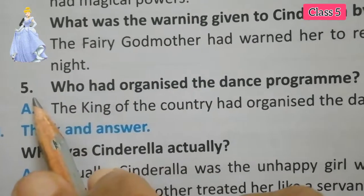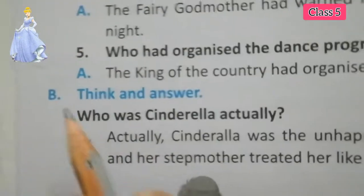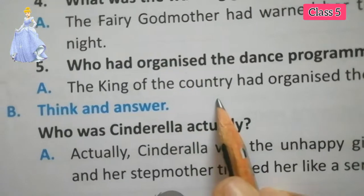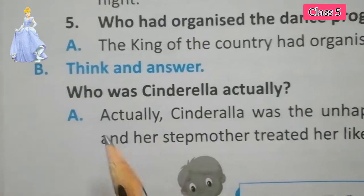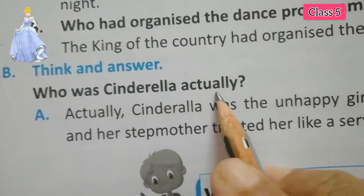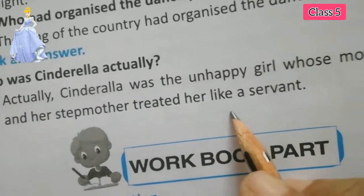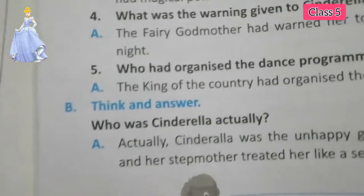Number 5: Who had organized the dance program? Answer: The king of the country had organized the dance program. Think and answer: Who was Cinderella actually? Answer: Cinderella was the unhappy girl whose mother had died and whose stepmother treated her like a servant. Write everything neatly in your book and send it to us in the group.